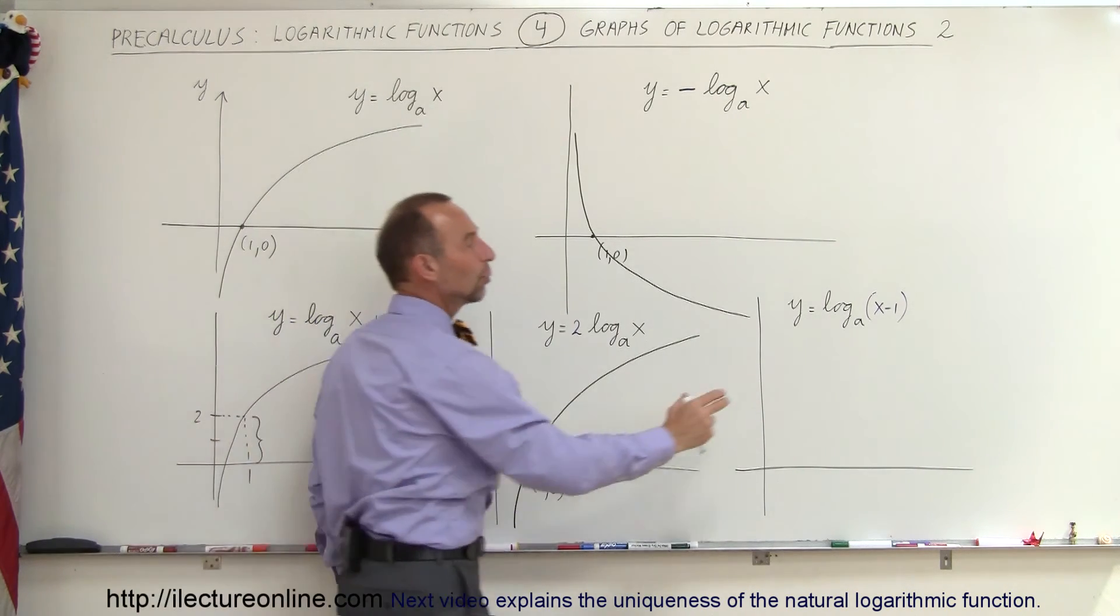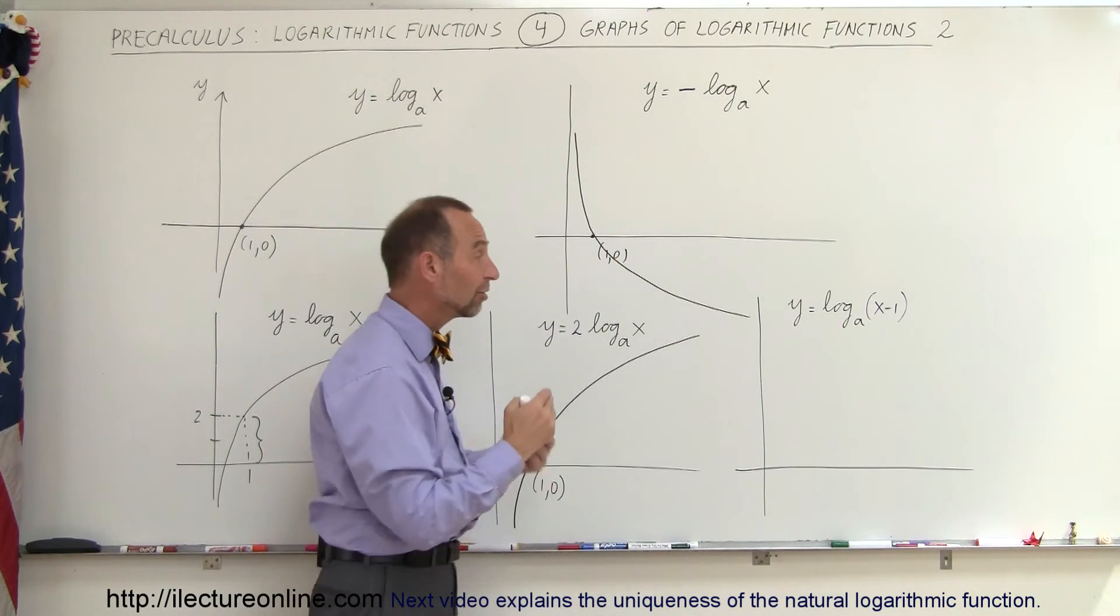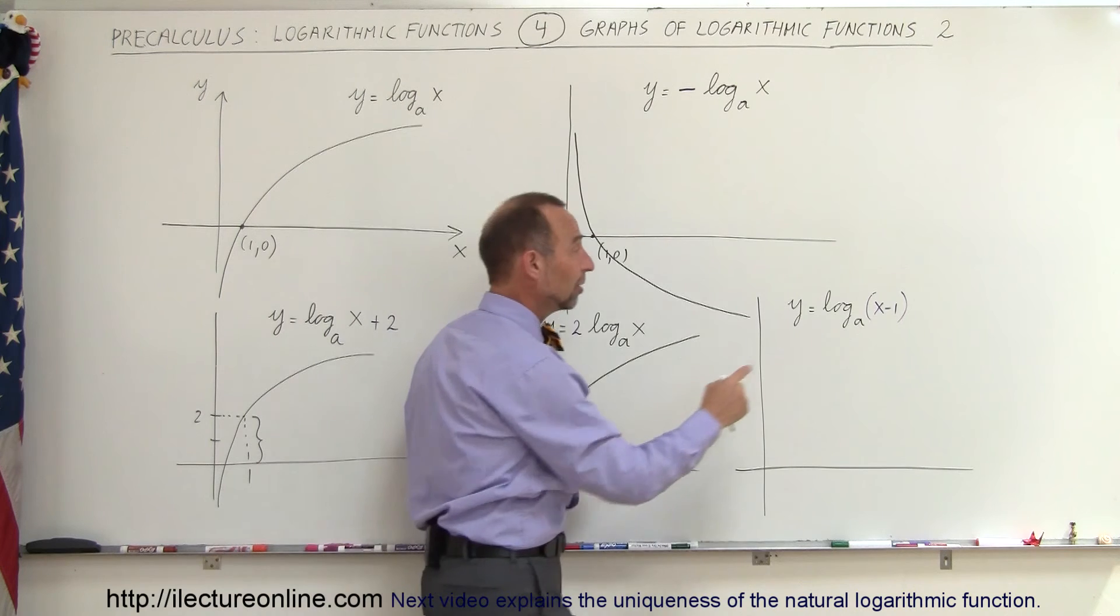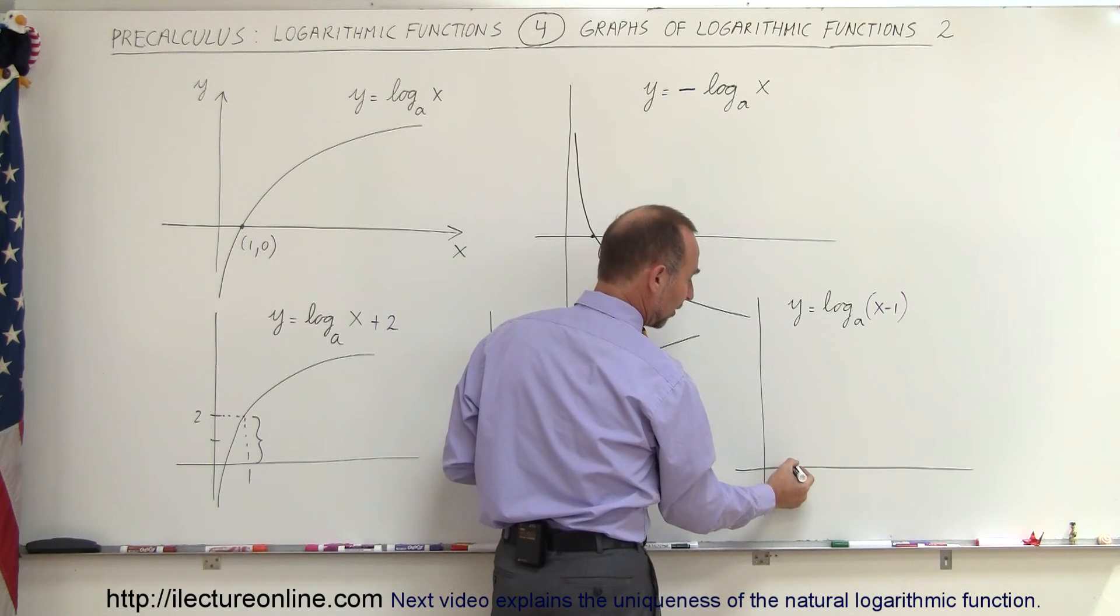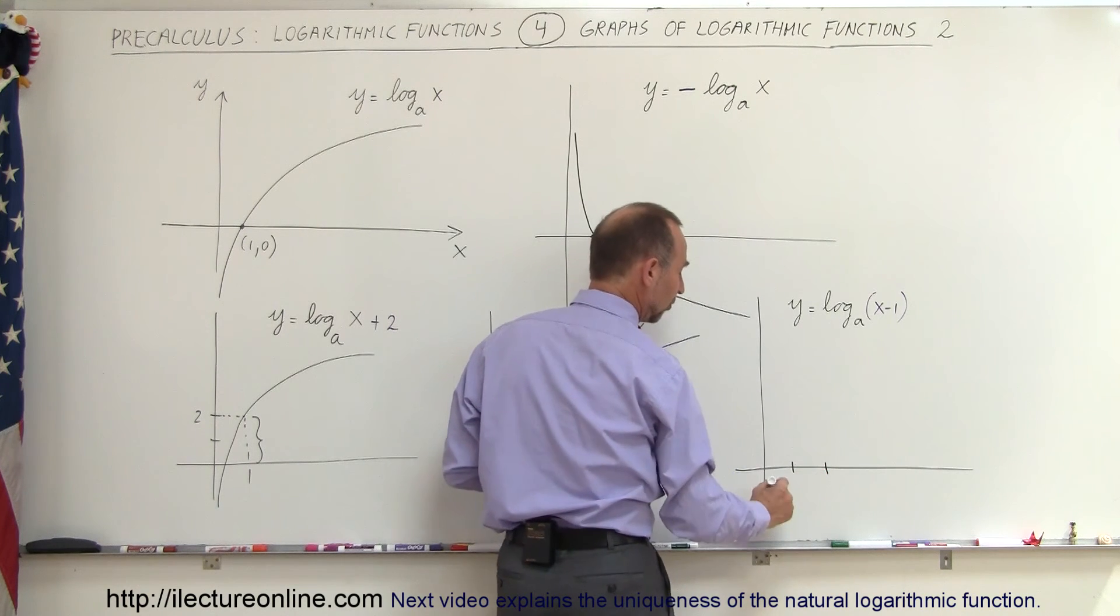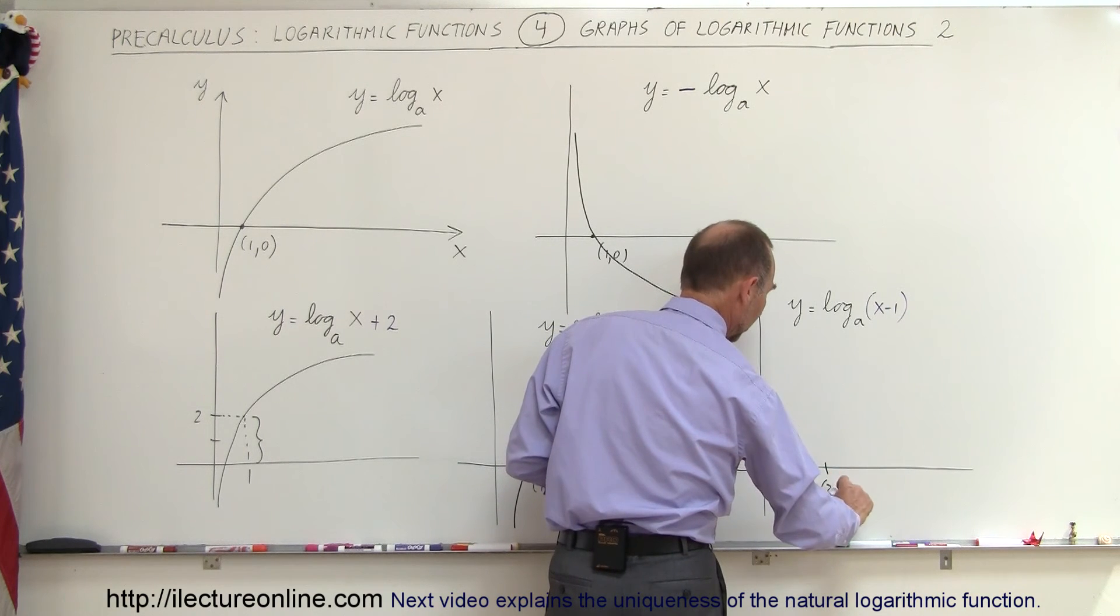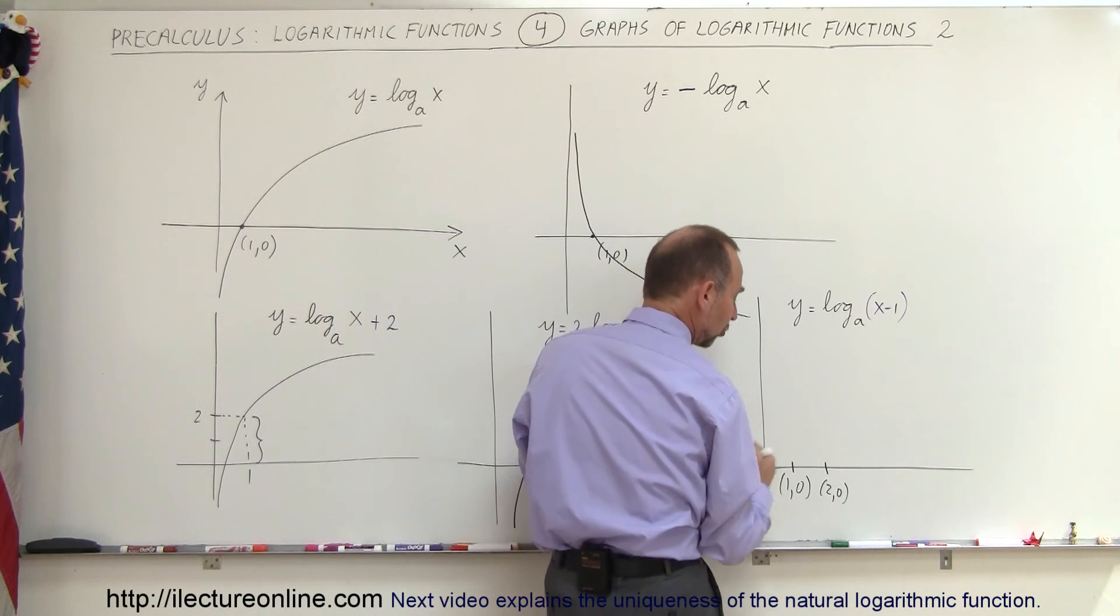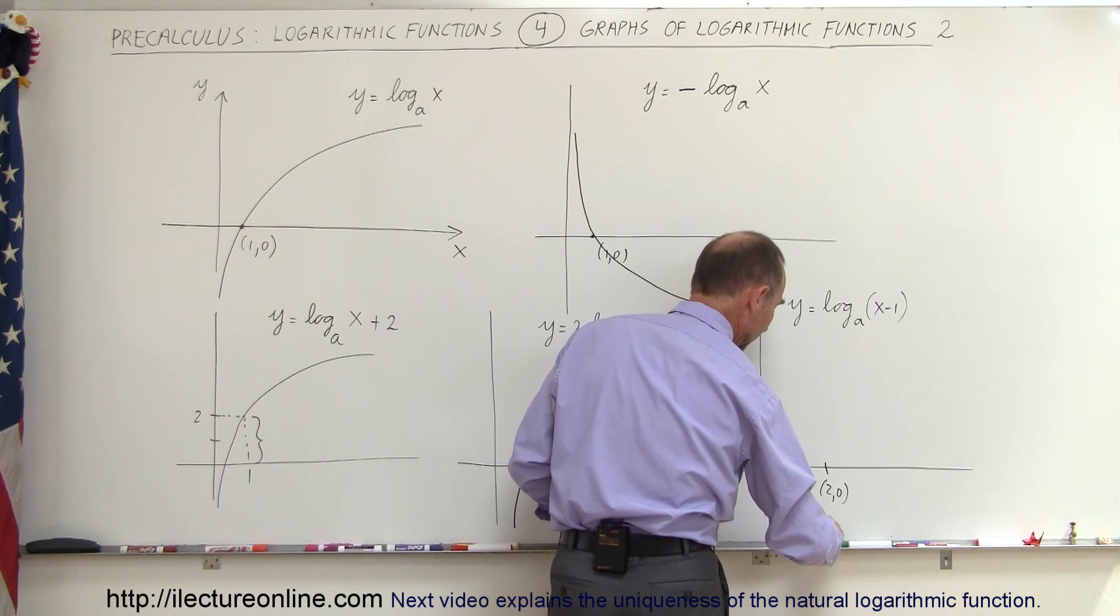And finally what happens when we add or subtract a number from x, what happens there is it will shift the function to the left or to the right. In this case if it's minus 1, it will shift to the right by minus 1. So instead of going to the point 1, 0, it will actually go to the point 2, 0. So this is the point 1, 0. This is the point 2, 0. So when we go x minus 1, it will shift the whole function to the right by one unit and the function will look like this.